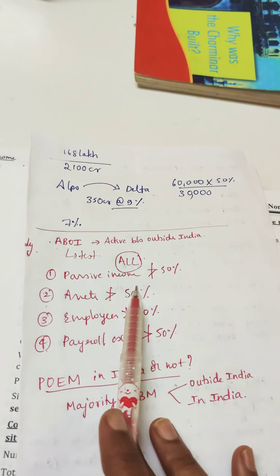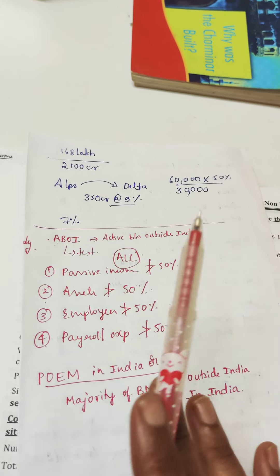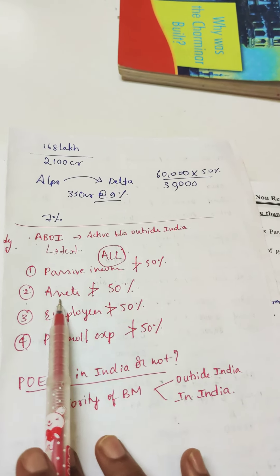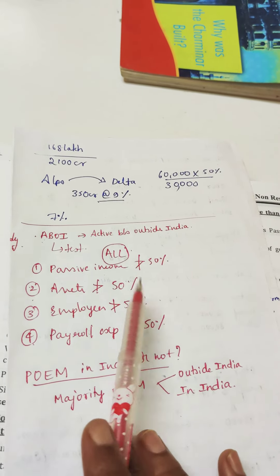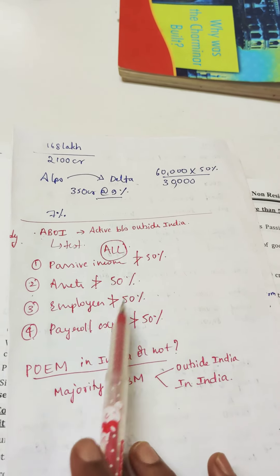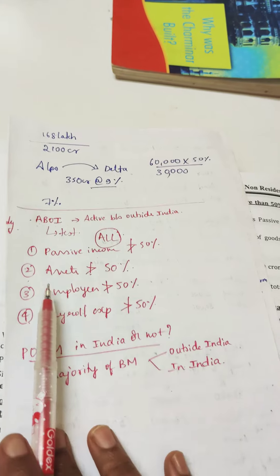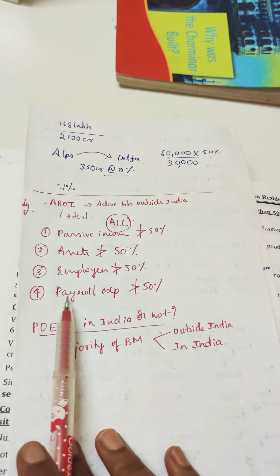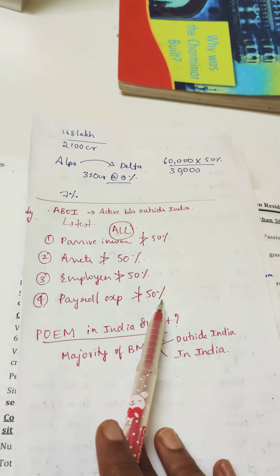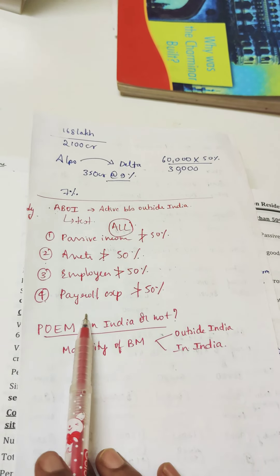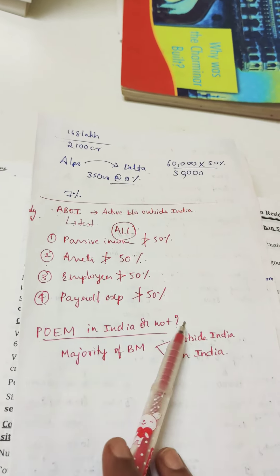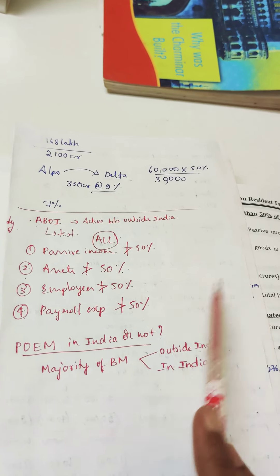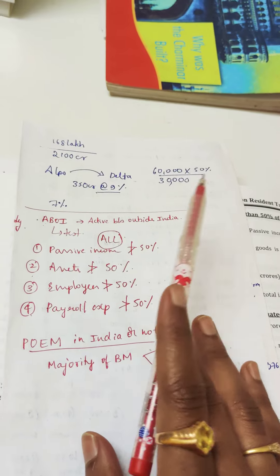First, the passive income earned should not be greater than 50%. Second, assets situated in India should not be greater than 50%. Third, employees situated in India should not be greater than 50%. Fourth, payroll expenses of those employees situated in India should not be greater than 50%. If the company satisfies all four conditions, then the active business is outside India.